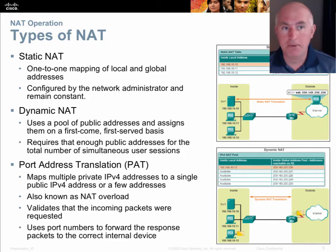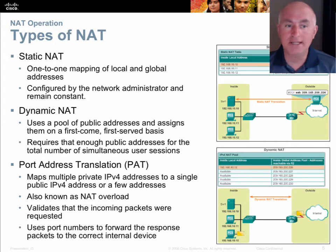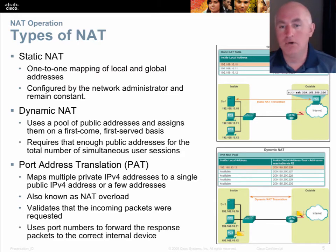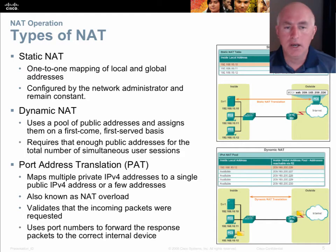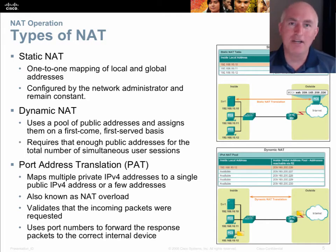The most popular form of NAT is PAT — Port Address Translation — where you take one public IP address and overload it. There's a physical maximum of around 40,000 port mappings, but practically speaking, any number of private address devices can all share that one public address.